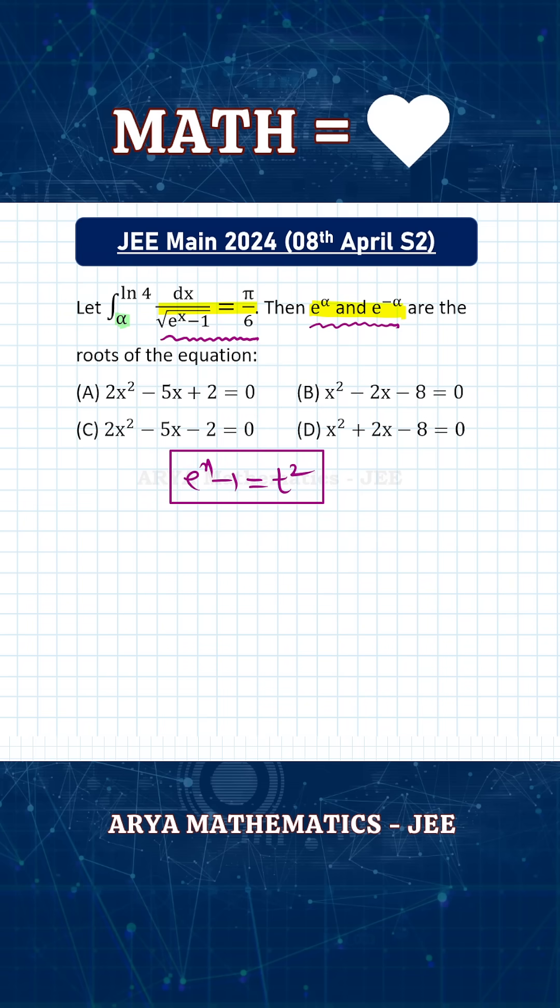In class 10th, we learned that if we have a quadratic equation of this form, ax² + bx + c = 0 and the roots of this quadratic equation are x₁ and x₂, then we know that x₁ + x₂, sum of roots, this is -b/a and product of roots x₁ × x₂, this is c/a.